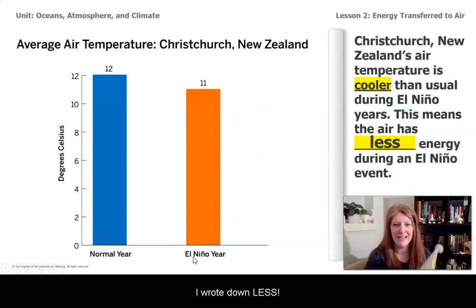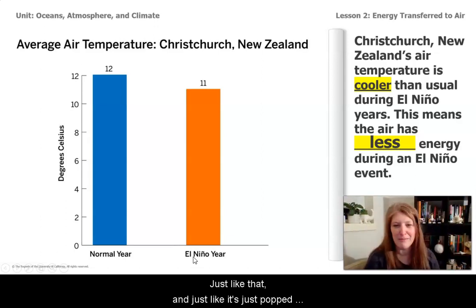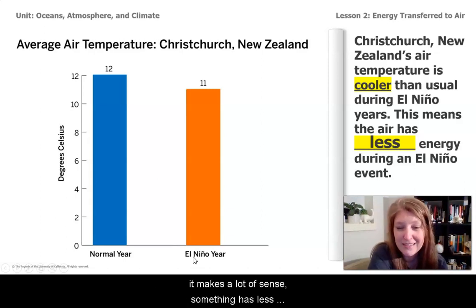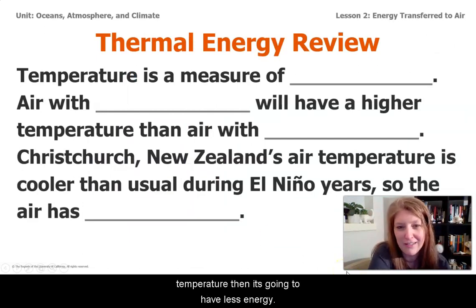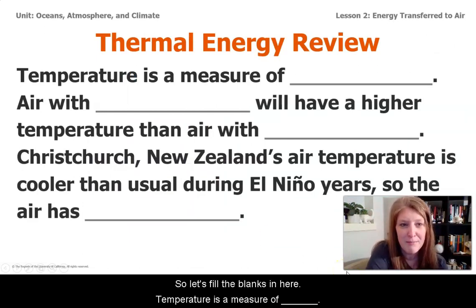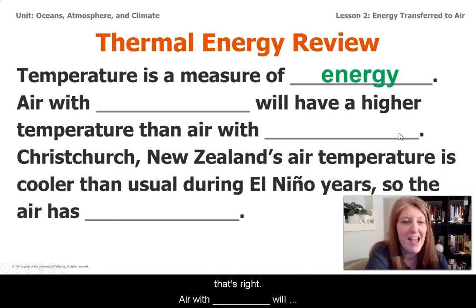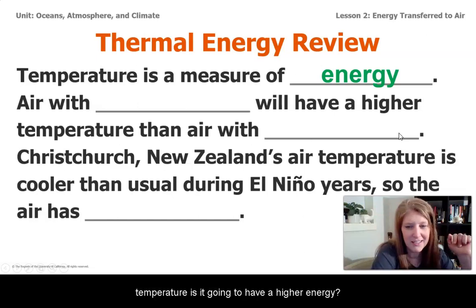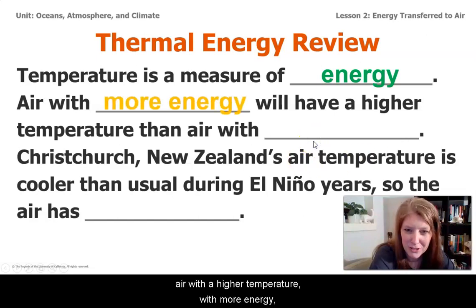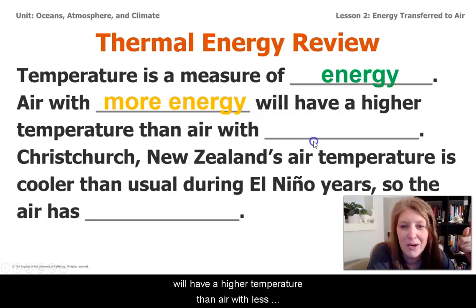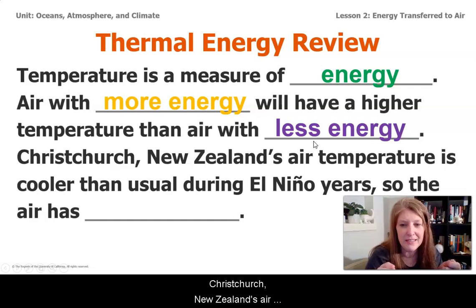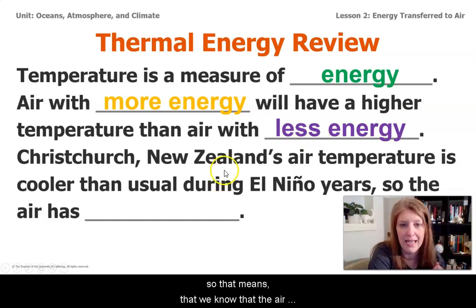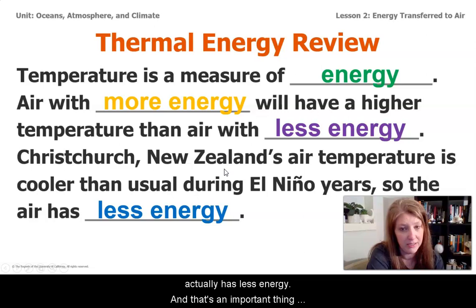What did you write down? I wrote down 'less,' just like it just popped up on the screen. Something that has less temperature is going to have less energy. Temperature is a measure of energy. Air with more energy will have a higher temperature than air with less energy. So let's pull this all together: Christchurch, New Zealand's air temperature is cooler than usual during El Niño years, which means that the air actually has less energy. That's an important thing to understand.